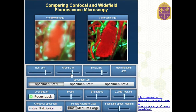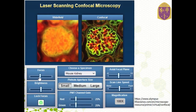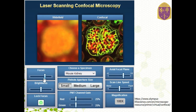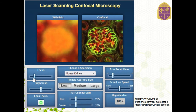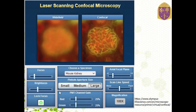There are options to change the placement to get practical skills of adjustment on different specimens — for example, how to explore the kidney of a mouse, and how the image will change if you change various parameters.